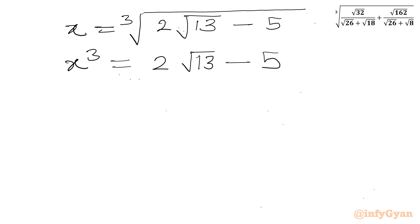Now I will use Simon's favorite factoring trick. Let us multiply both sides by 8. So I will write 8x cube equal to 8 times 2 root 13 minus 5.